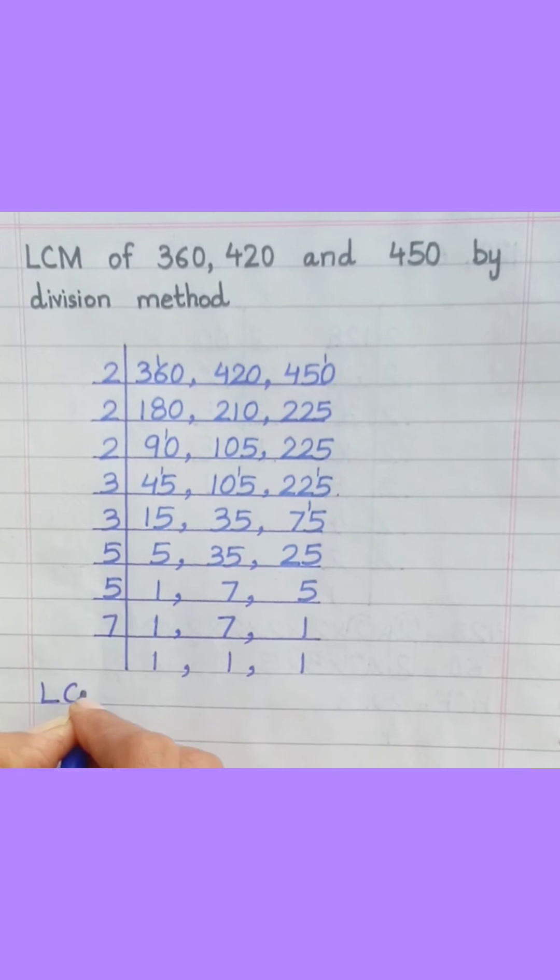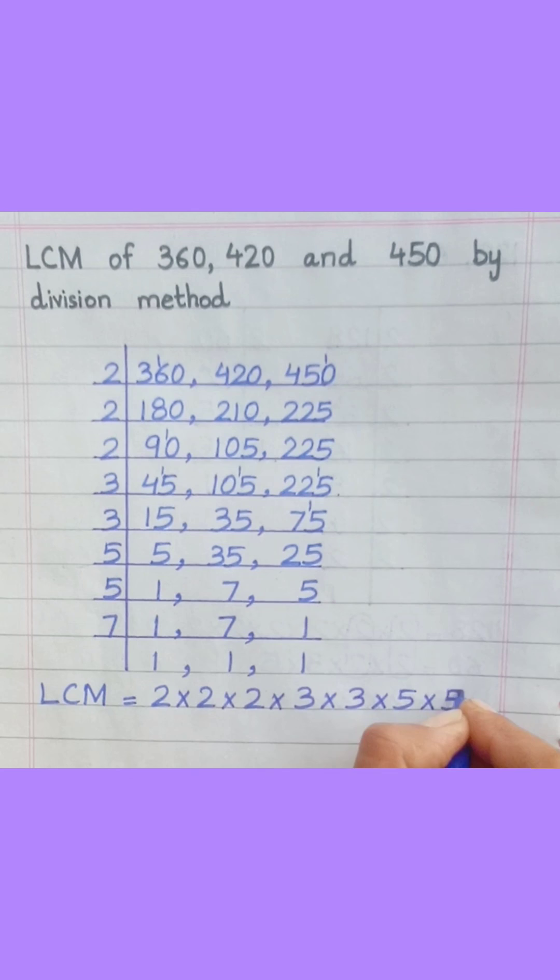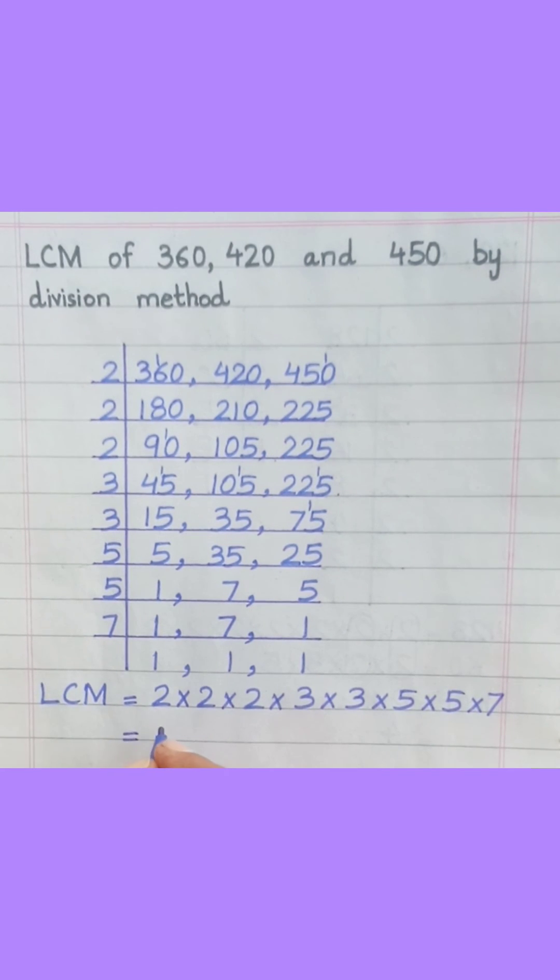LCM equals 2 multiply 2 multiply 2 multiply 3 multiply 3 multiply 5 multiply 5 multiply 7 equals 12,600.